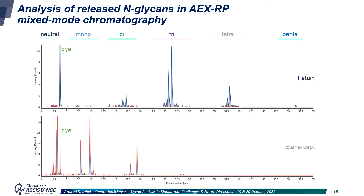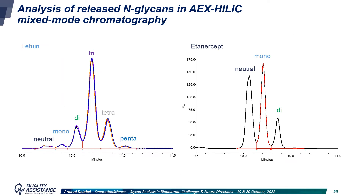Other separation modes can be used, such as mixed mode — here ion exchange and reverse phase — and in that case glycans can be separated based on their charge, with first a mass with neutral glycans, then mono-sialylated, di-sialylated, and so on, which is very useful for highly sialylated glycoproteins such as fetuin or etanercept. Using another mixed mode column combining ion exchange and HILIC, a simpler separation between the different charges is obtained, and this method is perfectly suited for QC analysis of sialylated proteins.